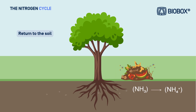When plants and animals die or excrete waste, the organic matter they contain is broken down by soil microorganisms in a process called mineralization. During this process, organic nitrogen is converted into ammonia, which quickly transforms into ammonium in the soil.